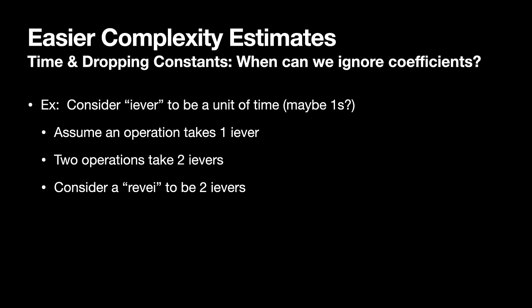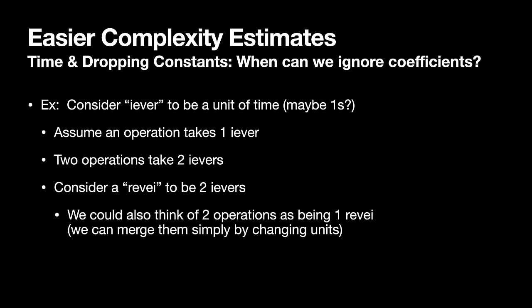We could reflect back on our same two operations and just recast them by simply changing the unit. Two operations could take two eavers or it could take one revi. So this is an example where merely changing the unit gives us a different way to express something that's roughly equivalent.